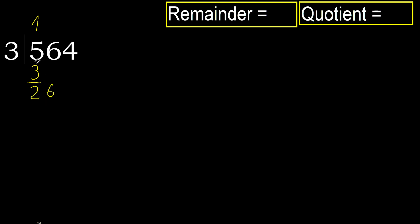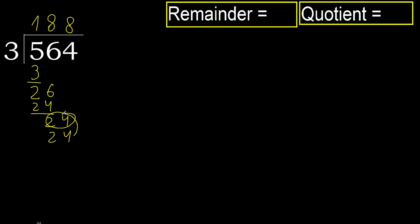26: 3 multiplied by 9 is 27, which is greater. Multiply by 8: 24 is not greater. Subtract. Next, 24: 3 multiplied by 8 is 24, which is not greater. Subtract: 24 minus 24 equals 0.